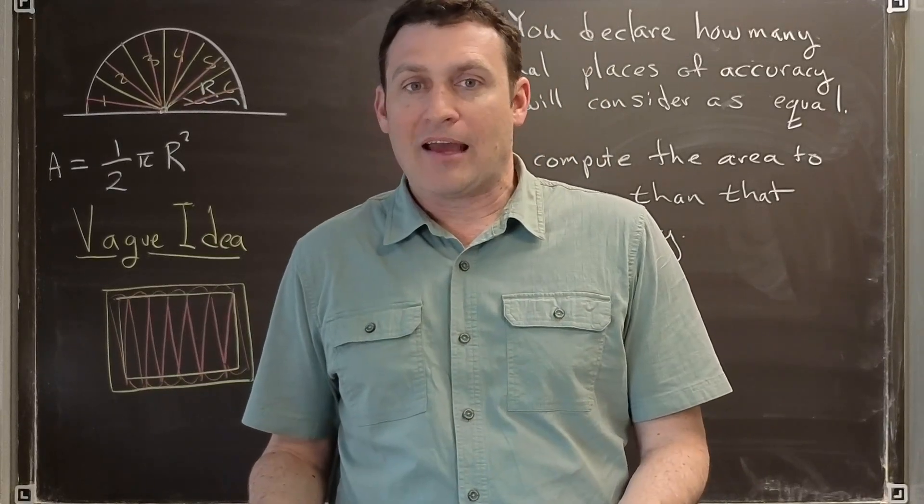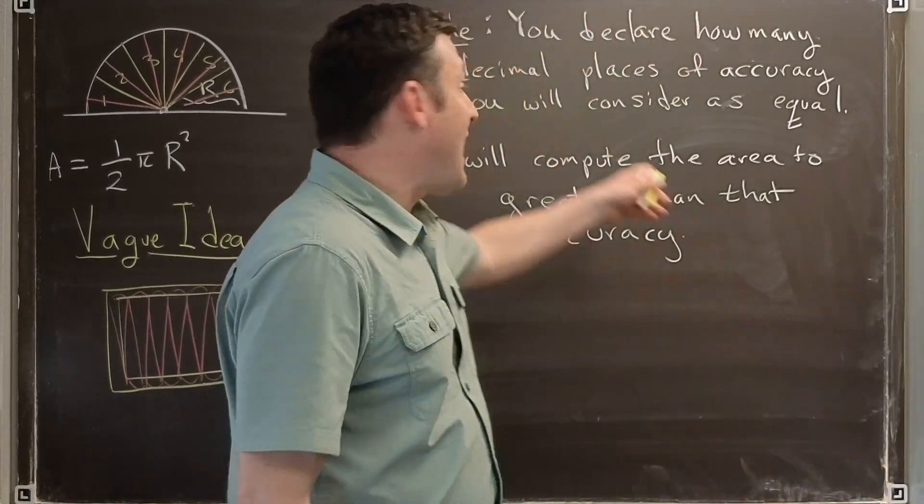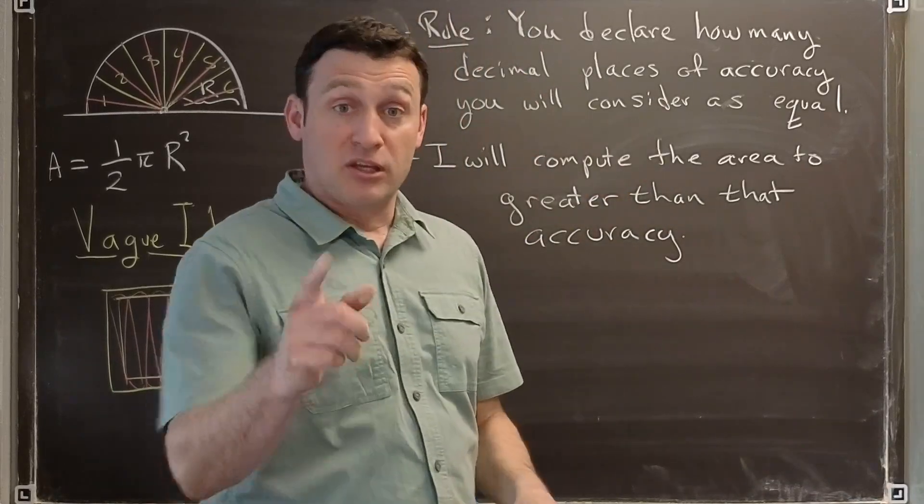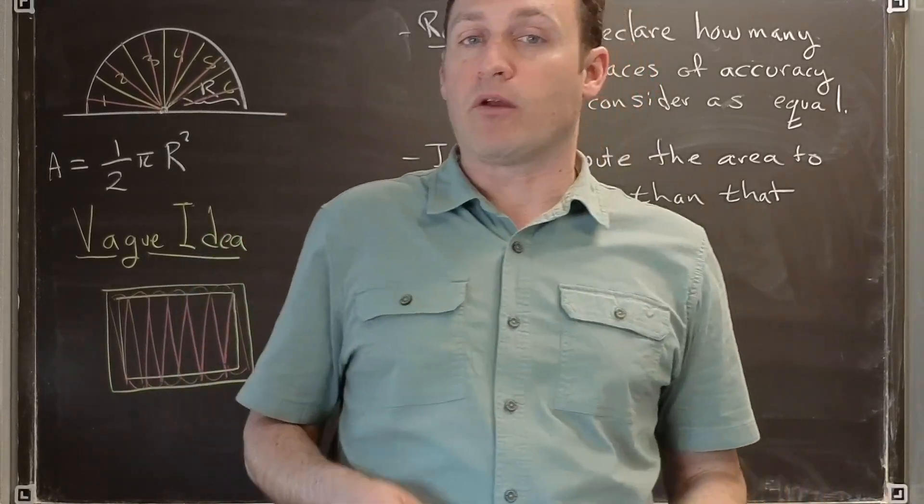At that point, we can take either the inside or the outside as our accurate measurement of that area. What sense is this accurate? Of course, it's not the actual area of the circle, but it's accurate to within the number of decimal places that you declared at the start. In this way, we win our contest.